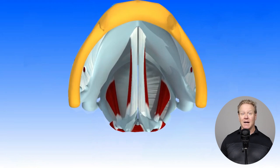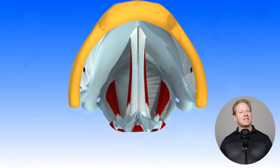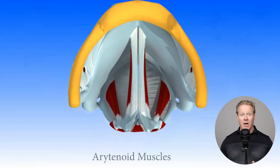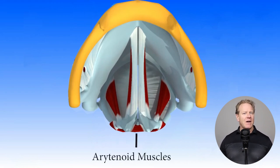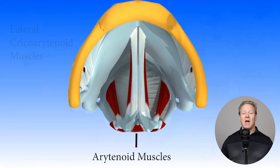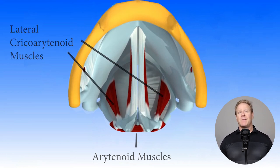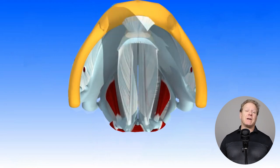There are three primary mechanisms by which the vocal cords adduct or come together to produce a sound. I previously discussed two of these mechanisms: one, the contraction of the transverse and oblique arytenoid muscles, and two, the subsequent contraction of the lateral cricoarytenoid muscles. The third mechanism involves the Bernoulli effect.